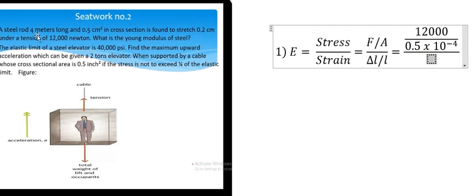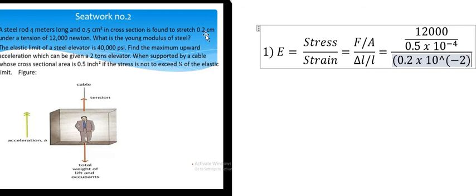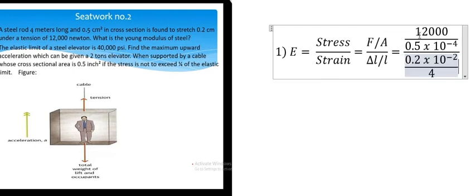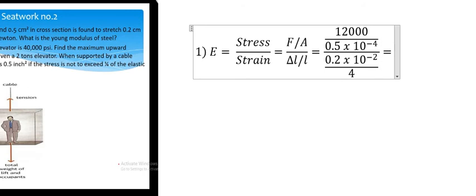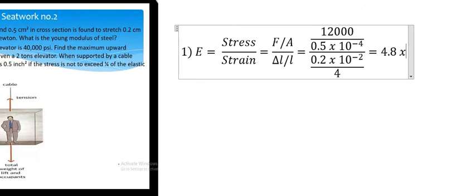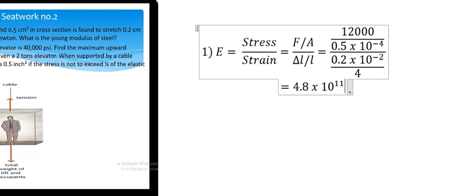For the extension we have 0.2, multiplied by 10 to the power of minus 2 because we need to convert centimeters to meters, divided by 4. We just calculate this number, and this is about 4 times 10 to the power of 11 newton per square meter.